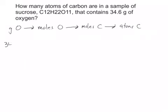Okay, so we're going to start off with 34.6 grams of oxygen. And we're going to use the molar mass. So we'll put grams of O on the bottom. 16.00 grams in one mole of O.